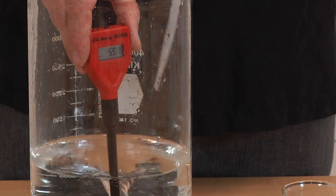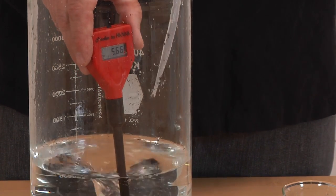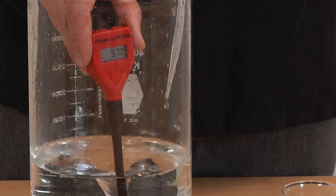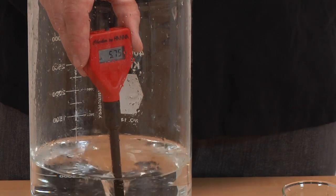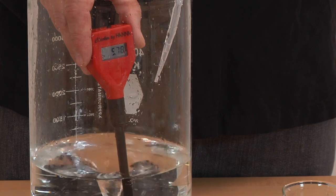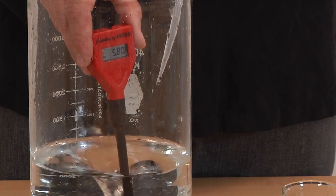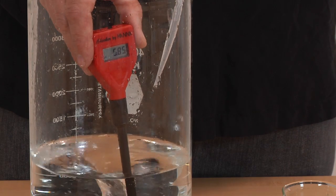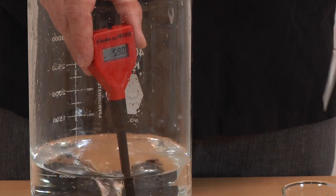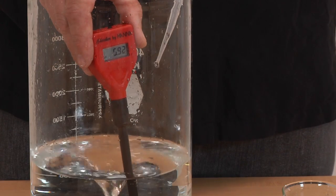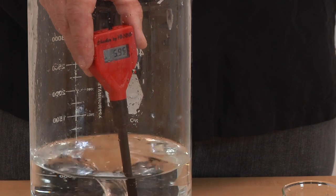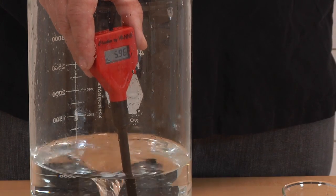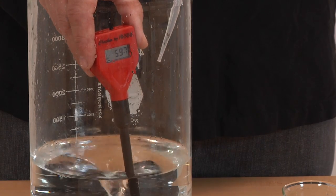So we'll start adding kind of a squirt by squirt. And as we get closer, we'll even go drop by drop. And you can see as we're at the tail end of that buffer range, we're really just taking a very small amount of the ammonium hydroxide to get to our final pH of 6.0.